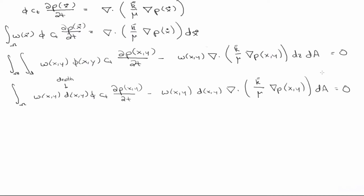At this point I'm going to introduce the discretization, just like we've done before. This time we're going to discretize over rectangles, splitting our domain integral into two integrals — one over the x direction, which is the length of the reservoir, and the y direction, which is the height of the reservoir. We then have a summation from i equals zero to nx minus one, and a summation j equals zero to ny minus one, all of that integrated.